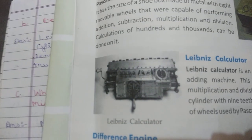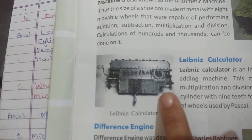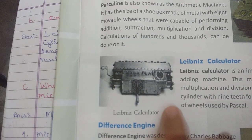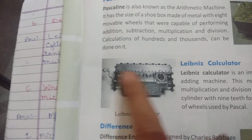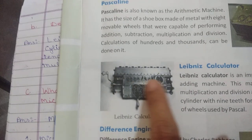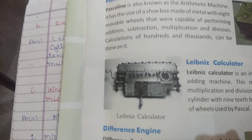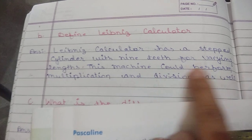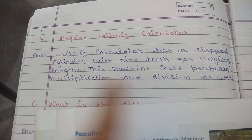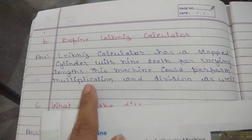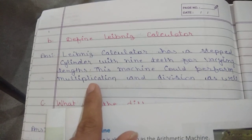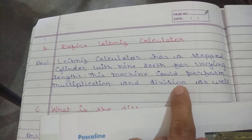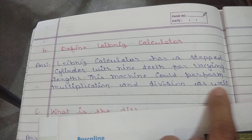Here is the diagram of the Leibniz calculator. It works step by step. This machine could perform two tasks: multiplication and division as well.